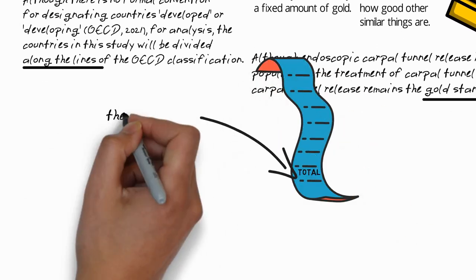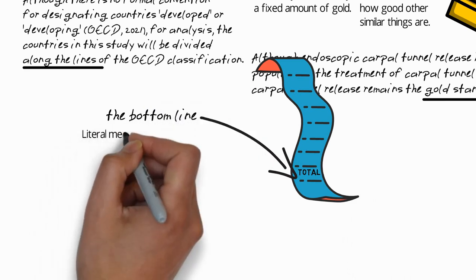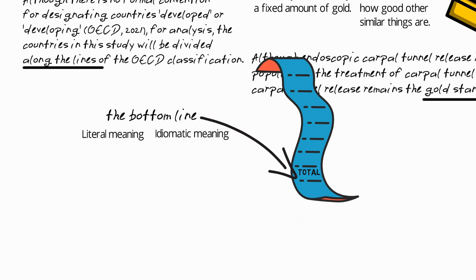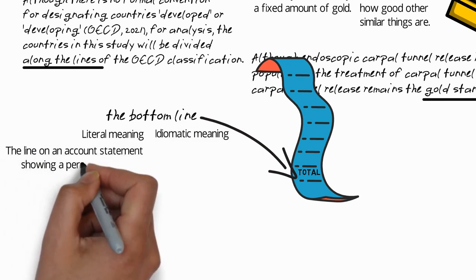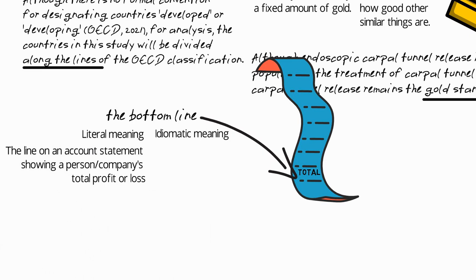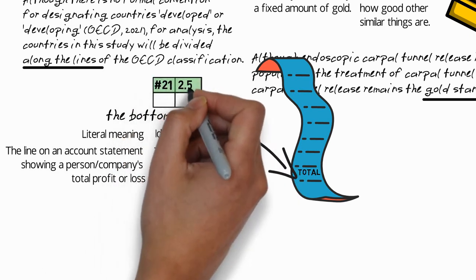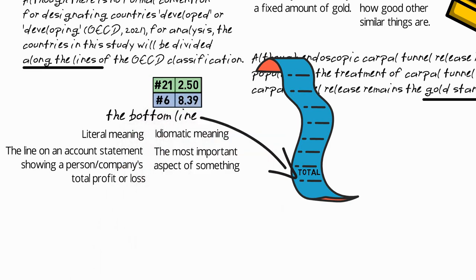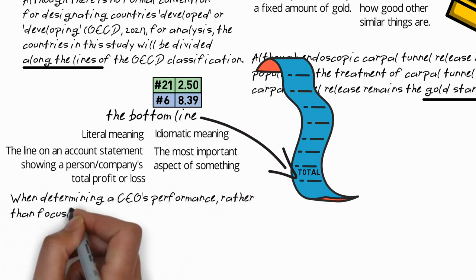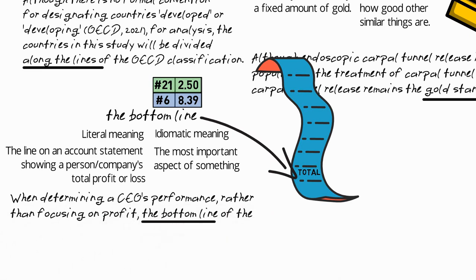The second idiom with the word line is the bottom line. And again, this has a literal and an idiomatic meaning, and it's useful again to understand both. So the literal meaning is the line on an account statement showing a person or a company's total profit or loss. And the idiomatic meaning derives again from the literal meaning, the idiomatic meaning being the most important aspect of something. So this idiom is number 21 in our list for academic writing idioms, but it's used much more frequently in speaking where it ranks number six. An example sentence: when determining a CEO's performance, rather than focusing on profit, the bottom line of the position is the growth of the company. In other words, the growth of the company is the most important factor.